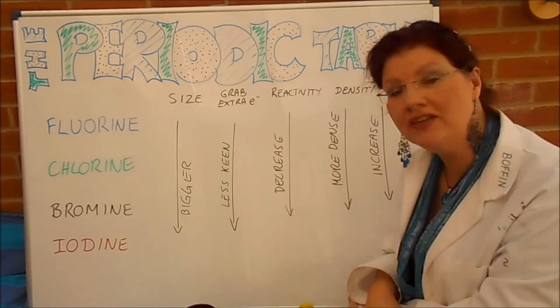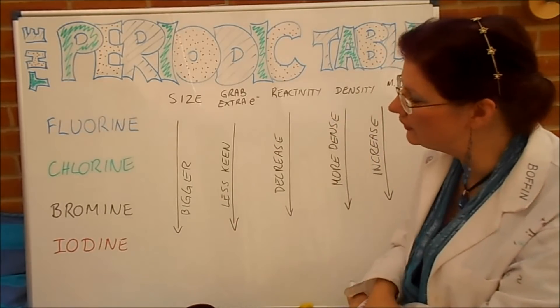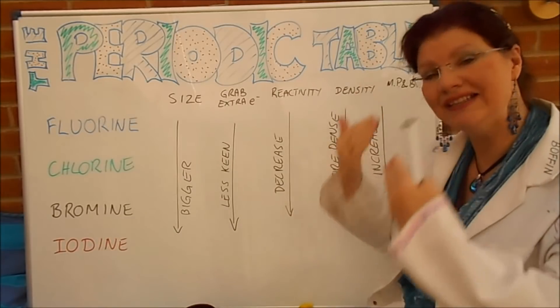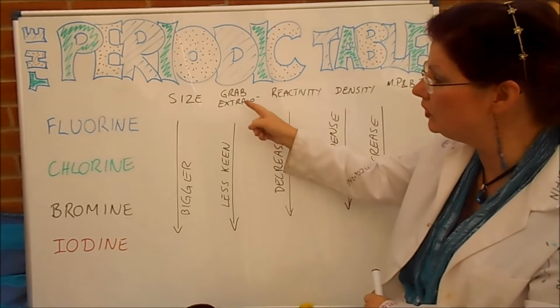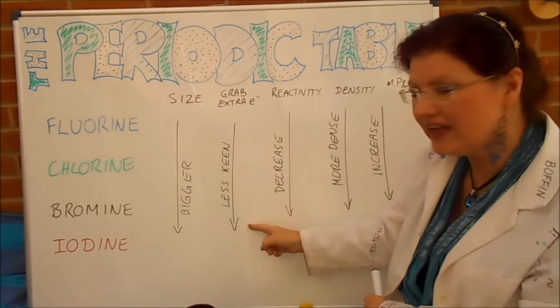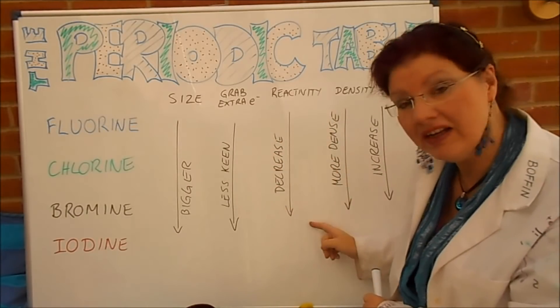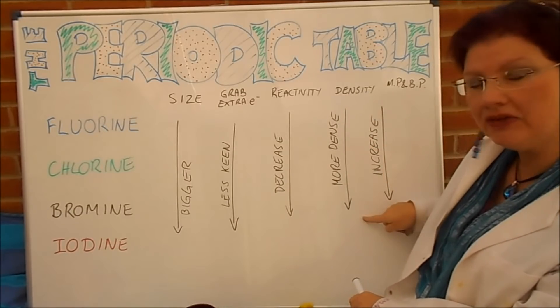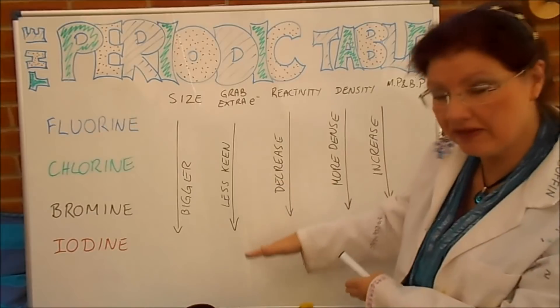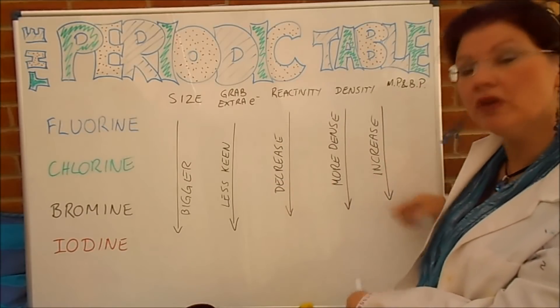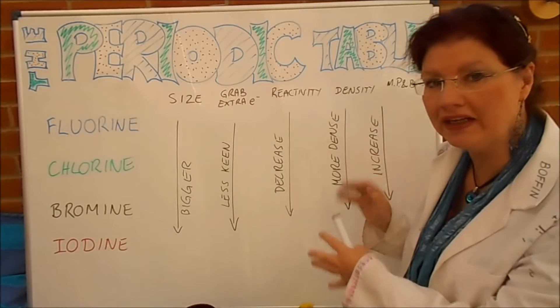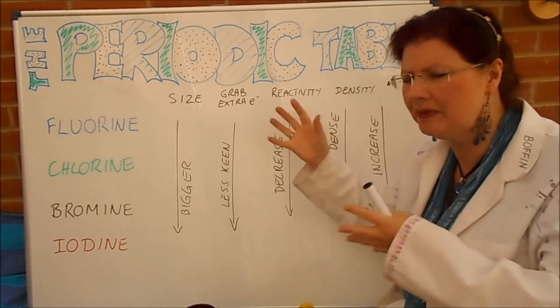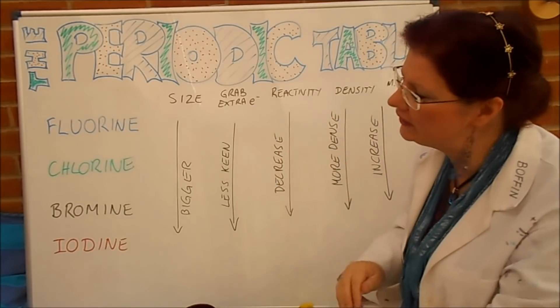So there you go: the tendencies as we go down the group in the halogens. You don't have to learn every single one of these. What you need to learn is the tendencies. As I've said, once you know they get less keen to grab electrons, that means they are less reactive as you go down there. If they become denser, they're solids at the bottom, and that also means their melting point and boiling point increases. So these things are all linked. If you learn how they link, that's much better than learning the individual factors because then you know how they all join together, how they fit together.